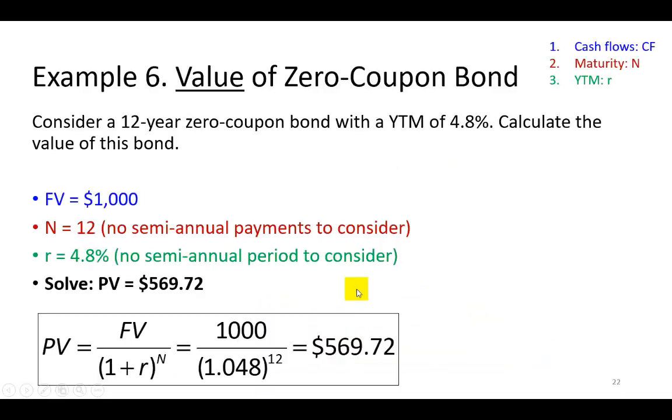So let's look at this quick example right here. It says consider a 12-year zero coupon bond with a yield to maturity of 4.8%. What's the value? So again, here's your prompt right here. The blue represents the cash flows you expect. In this case, it's just going to be a thousand dollars that you're going to receive at maturity. And the red is the maturity of the bond, which in this case is 12 years.